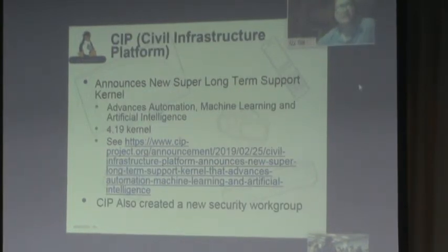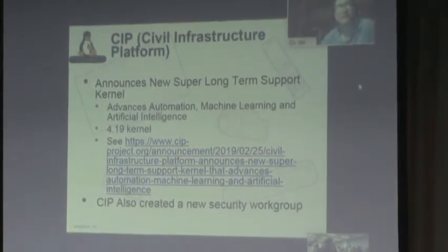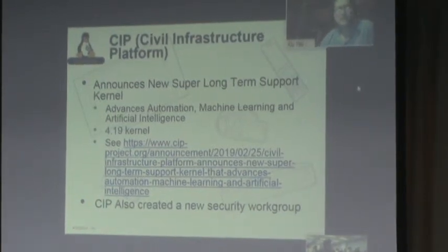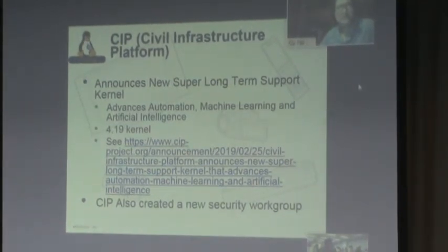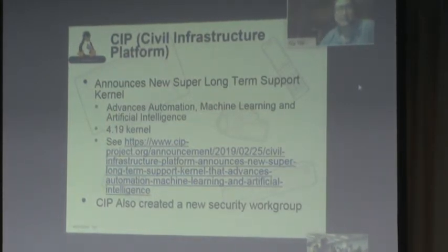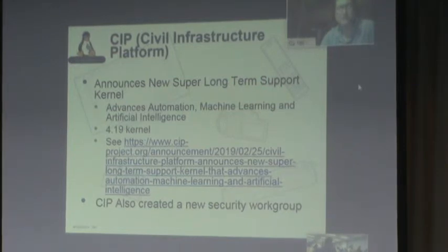The Civil Infrastructure Platform is the group at the Linux Foundation dealing with putting Linux in long-term civil projects — train stations, power plants, and the like. They've announced a new long-term release: their original release was 4.4, and now they have a new one with the 4.19 kernel, some machine learning and AI features, and targeting 10-plus years of support. They also added a new security working group, which is important for long-term support.